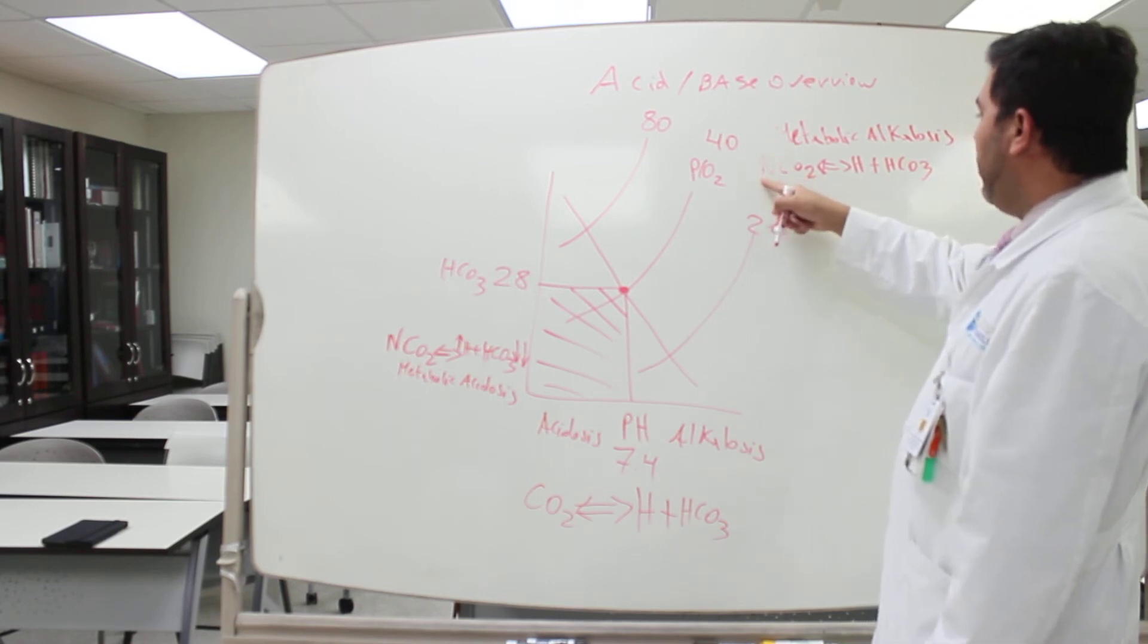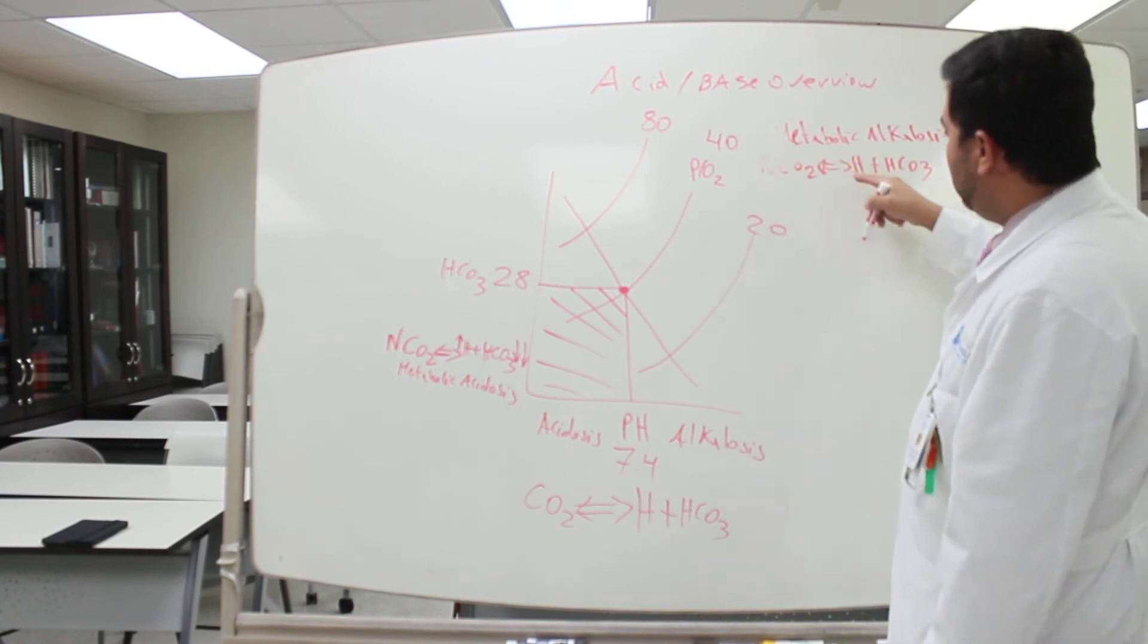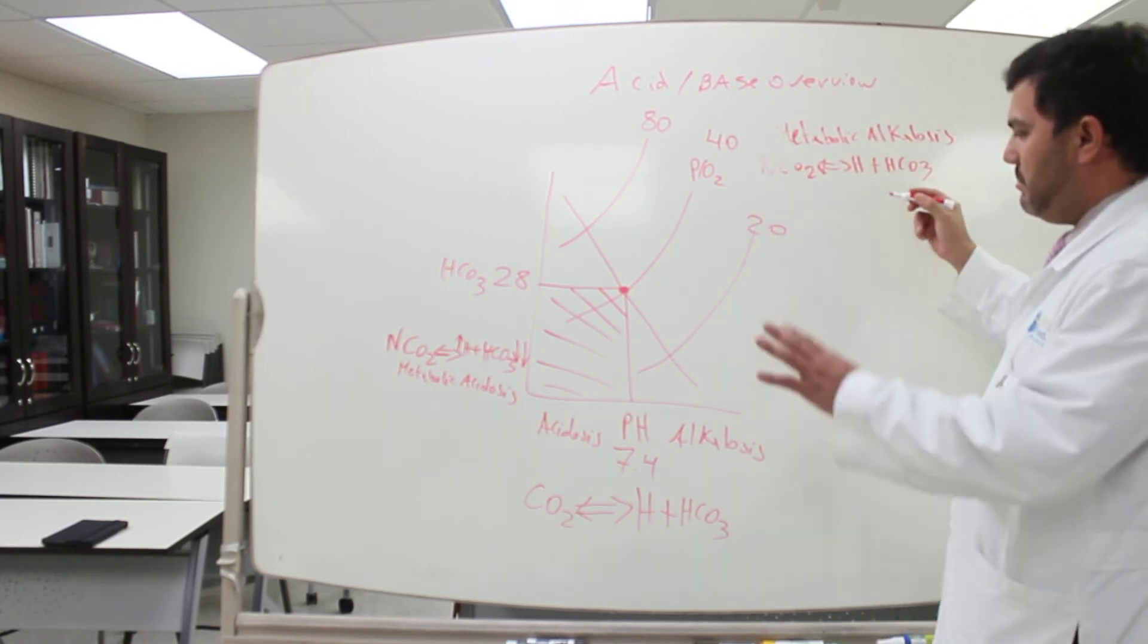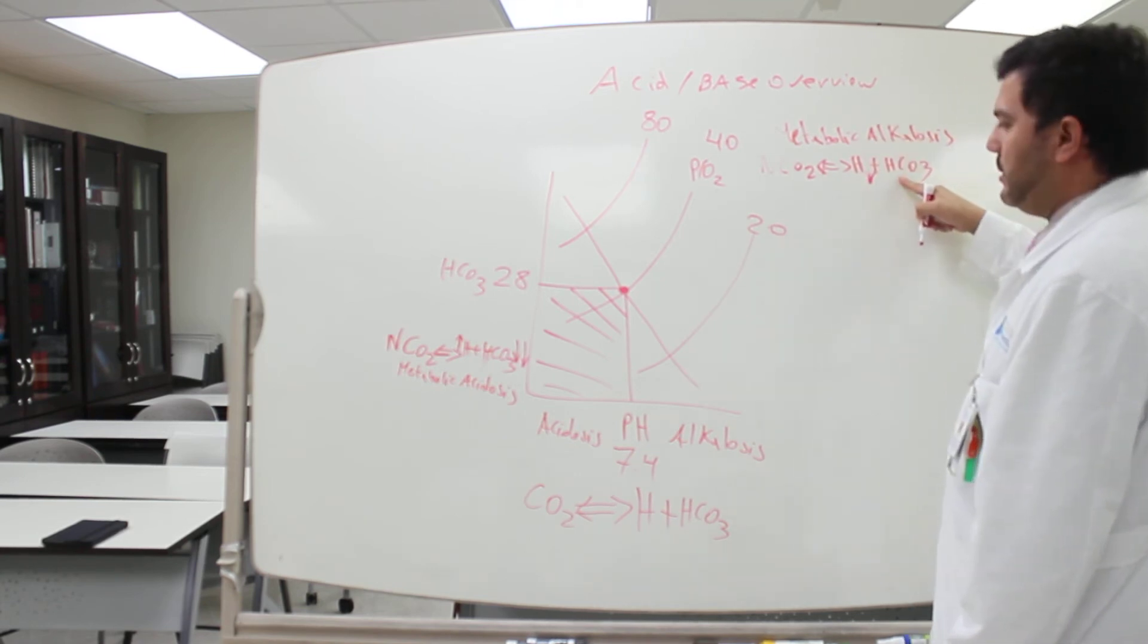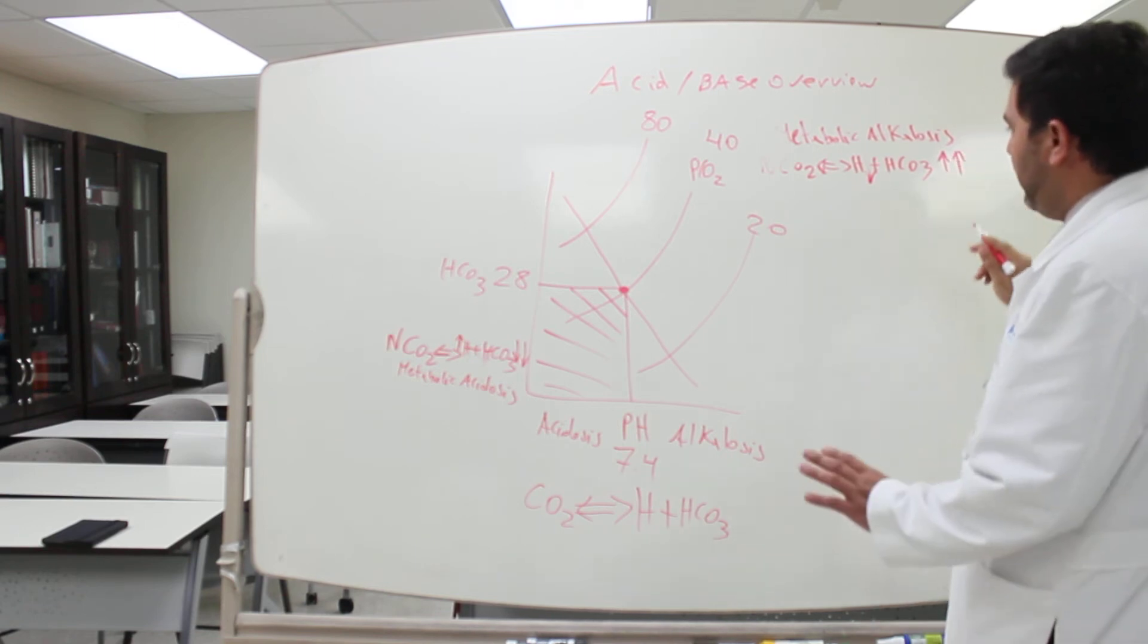So what you're going to see here is the pH over 7.4. The CO2 is going to be normal. The ions are going to be pretty much decreased, and the bicarbonate is going to be very high.